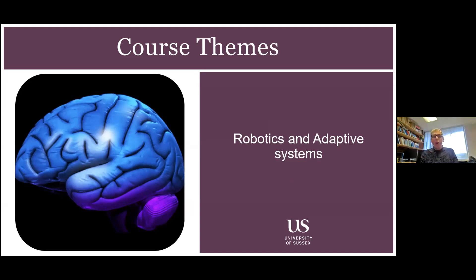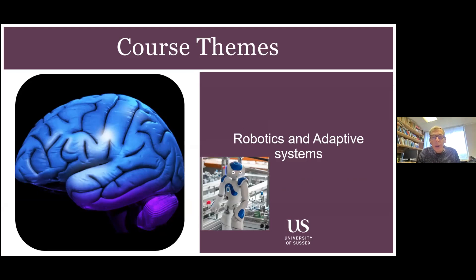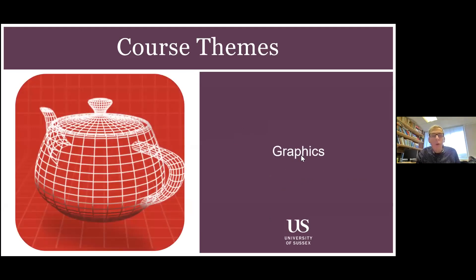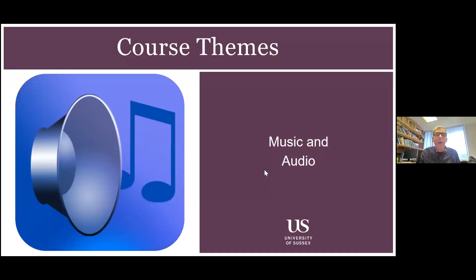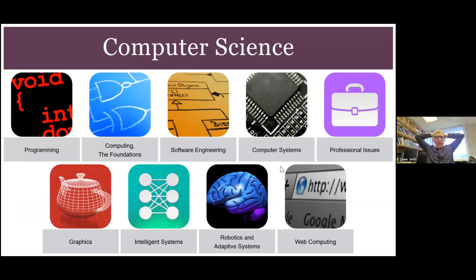We also have modules on robotics and adaptive systems — you get to play around with all sorts of different kinds of robots. There are modules on graphics for people interested in digital media, animated graphics, and CGI technology. And we also have options looking at how computer science contributes to the world of music and audio. Lots of different kinds of modules feeding into our various degree programs.